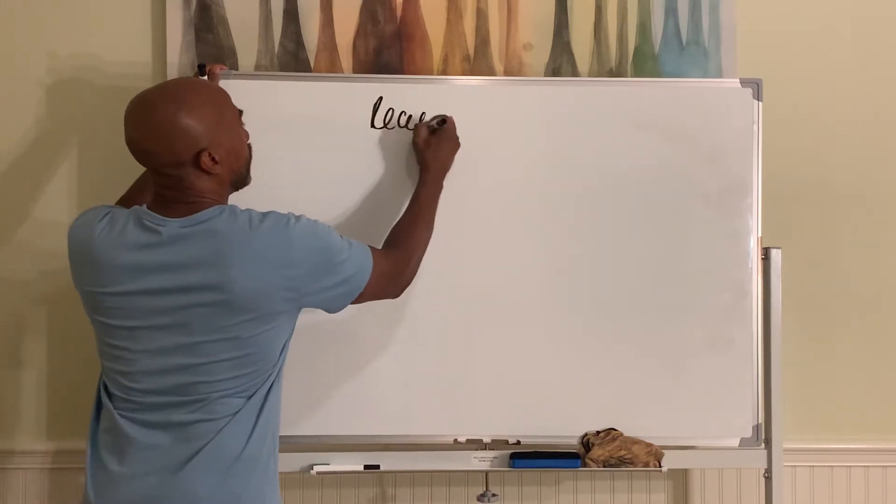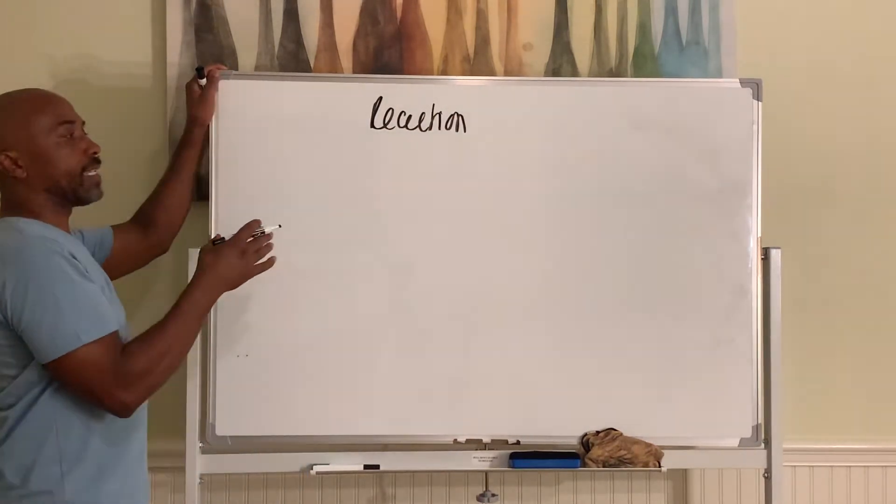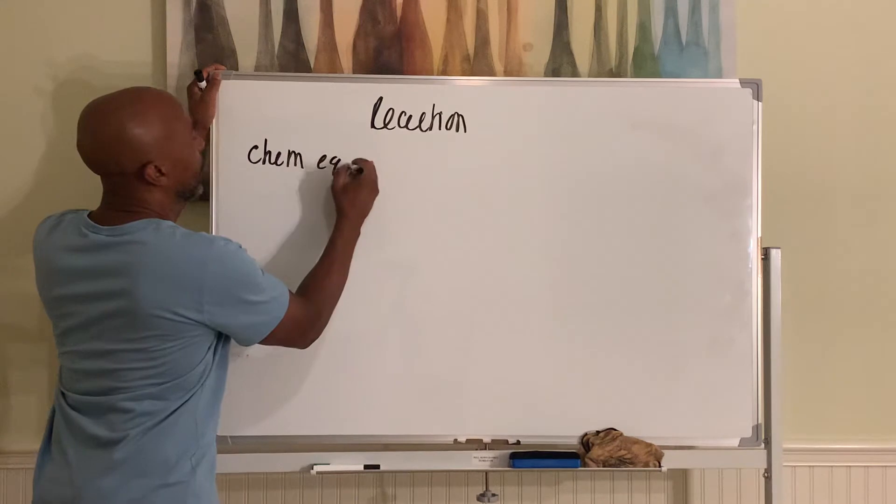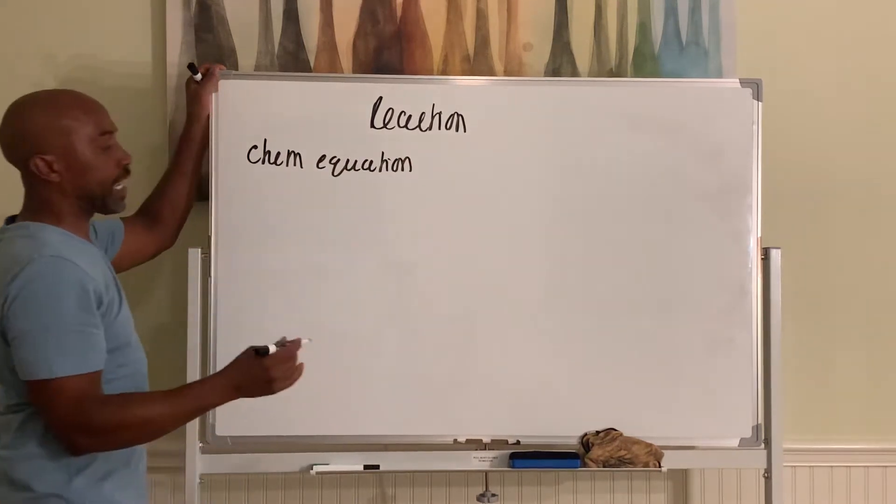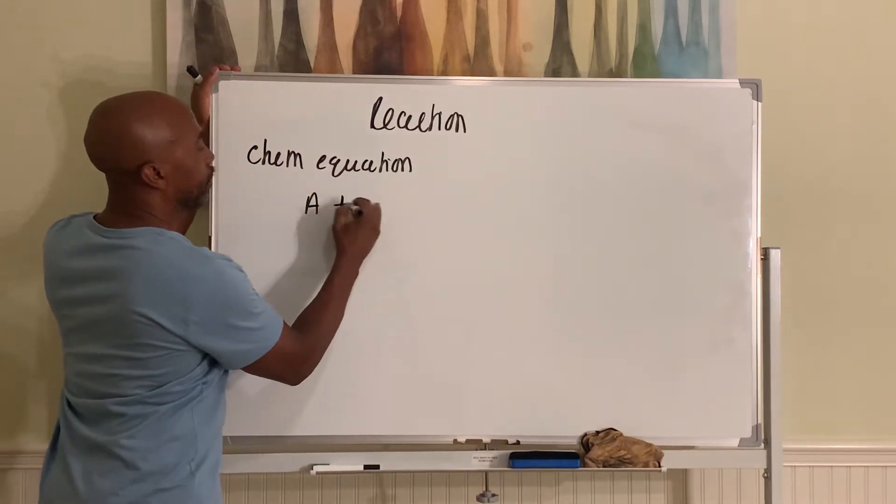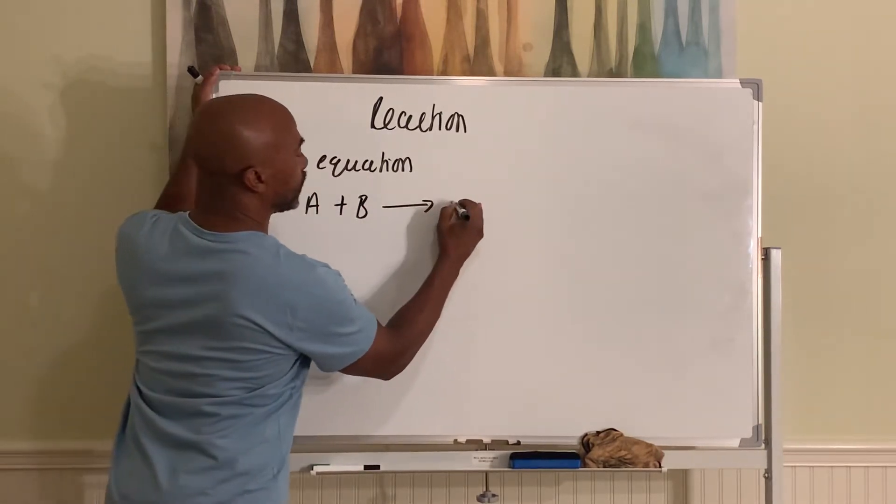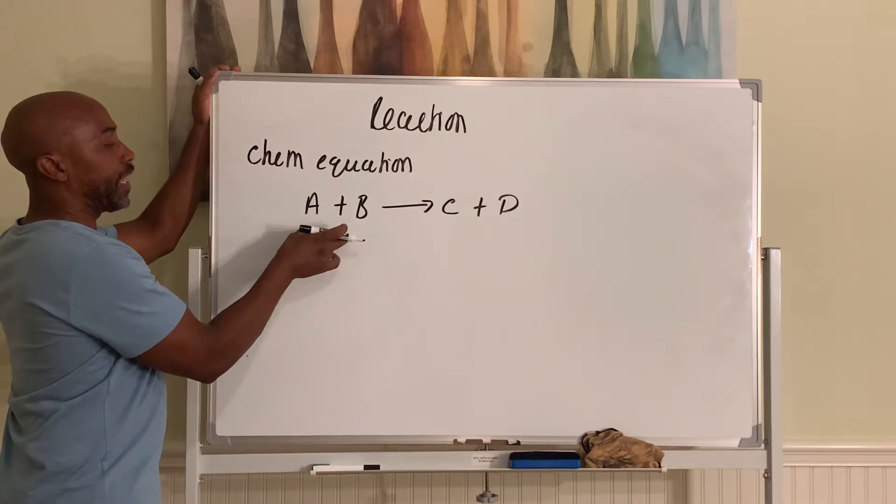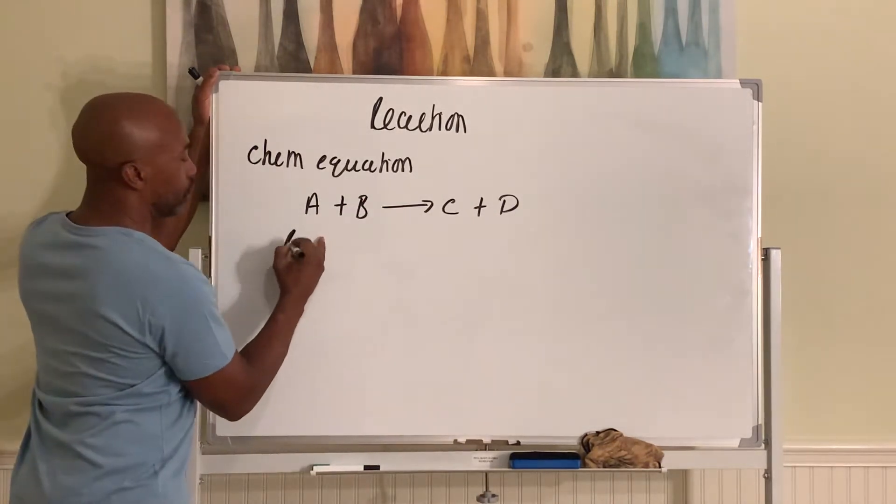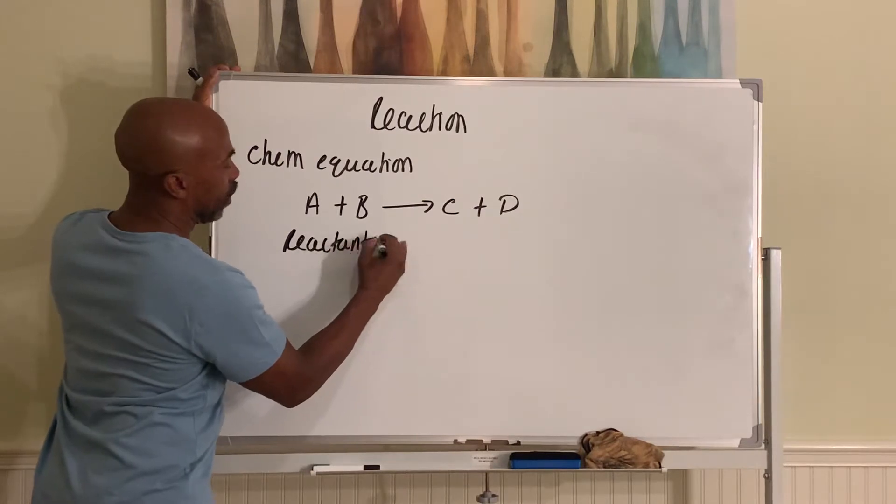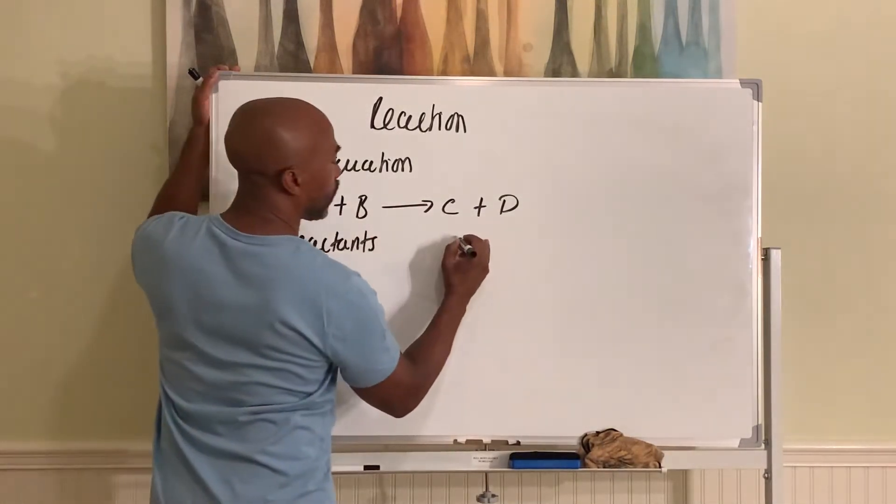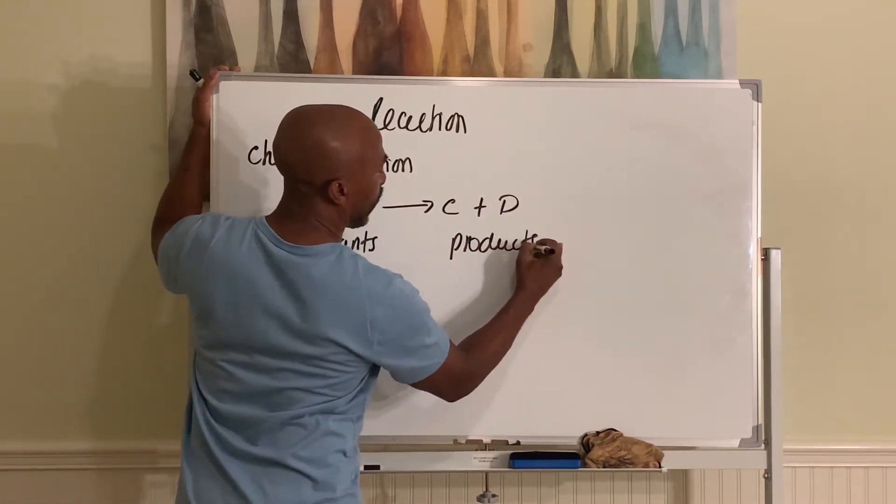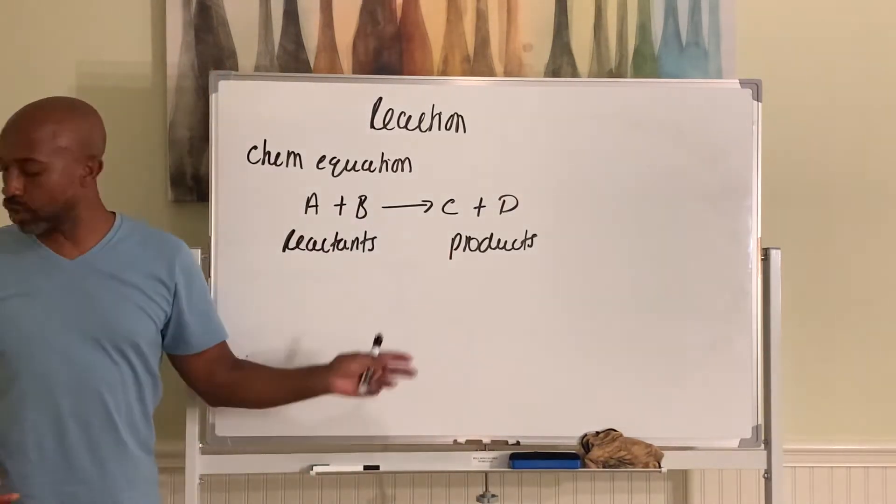So in a reaction, you can represent the event of a reaction by what's called a chemical equation. And in a chemical equation, for example, maybe say A plus B gives you C plus D. In an equation, the things that's to the left of the arrow are called your reactants over here. And what they form normally, usually to the right of the arrow, we call your products.